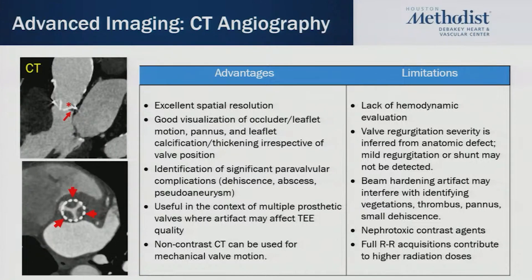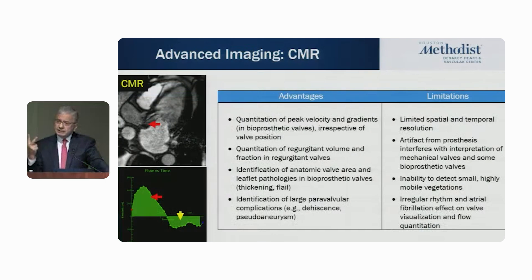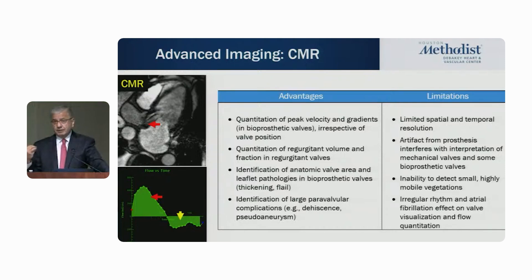You can see the example on the left — I can see a mechanical valve very well. The beauty of CT is that if I want to look at occluder mobility and related issues, CT excels there. For CMR, it is another methodology that can tell you about velocity and gradients — MRI and echocardiography are better in bioprosthetic valves, as you'll have a lot of artifacts with mechanical valves in MRI. CMR's main strength is quantitation of regurgitation, where it is probably a better methodology than many others.